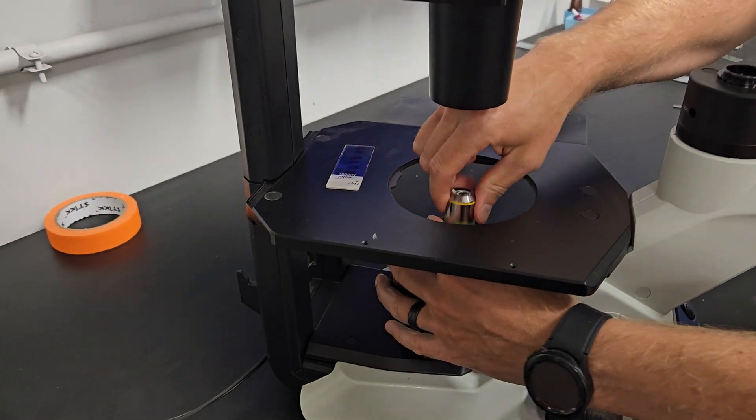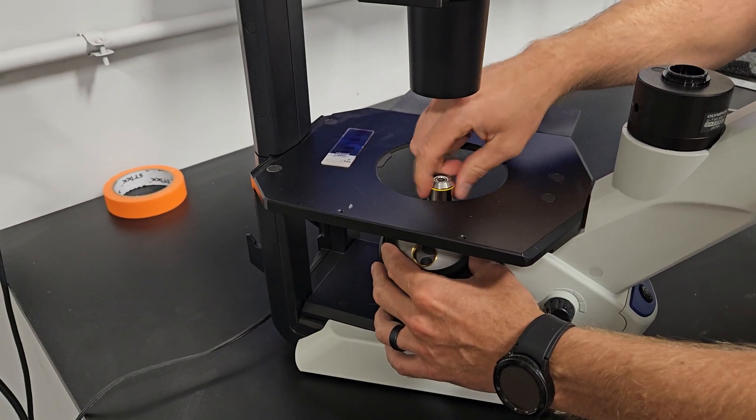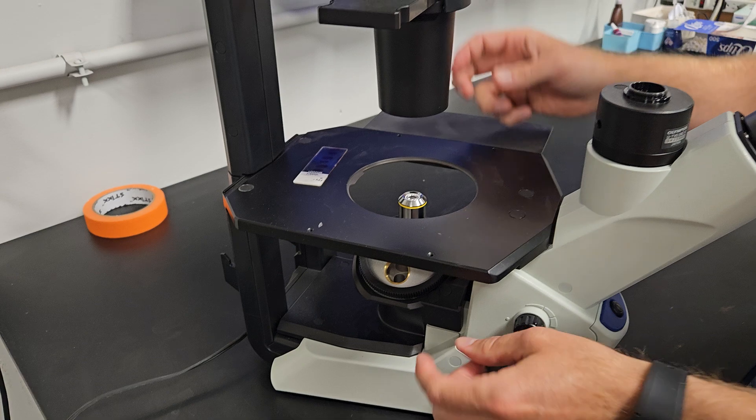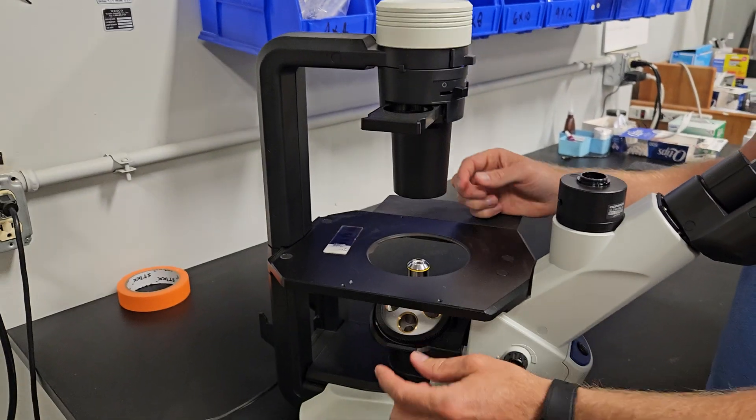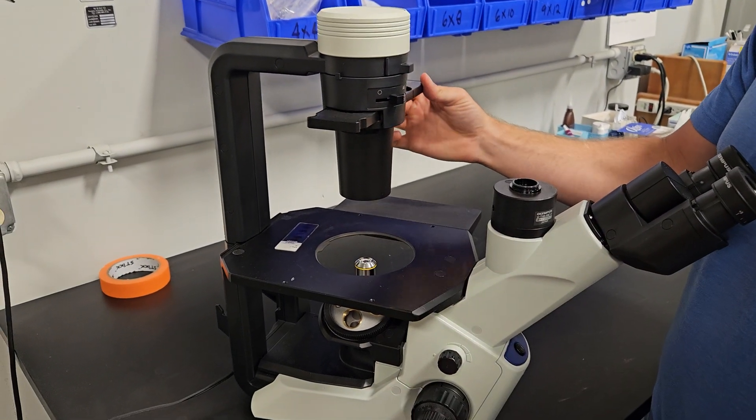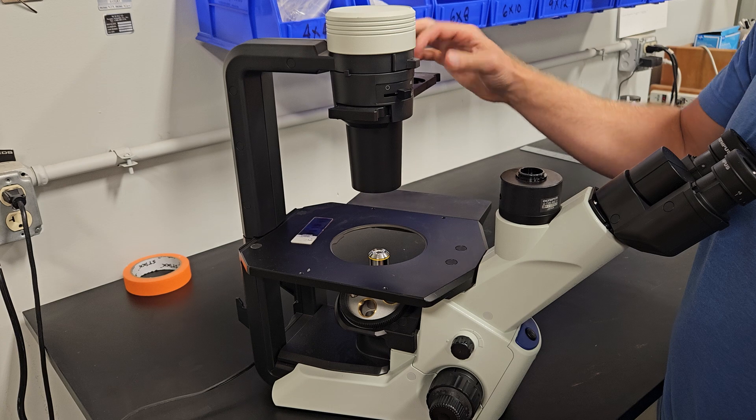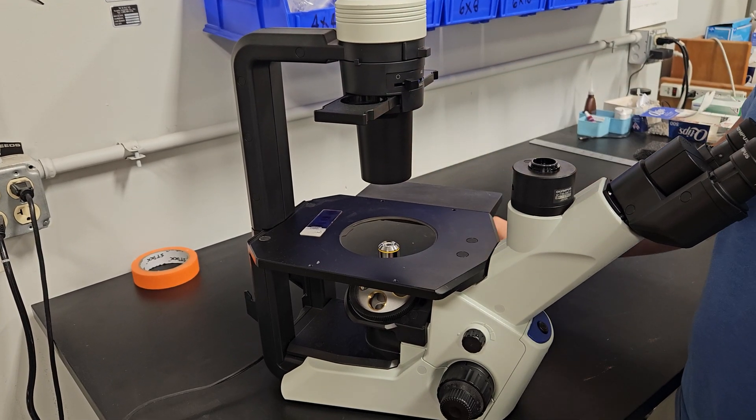So your other objectives need to match, but you might have to have, like if you had a 40X or a 4X on here, they may have a different phase ring. So you would have to move the slider to make the phase ring correspond to the objective.